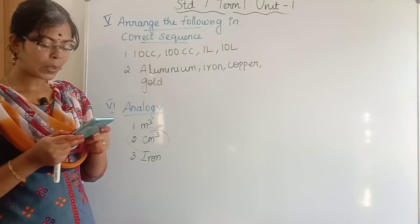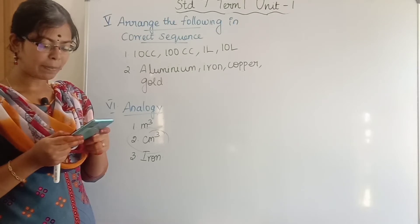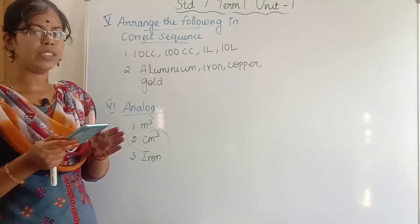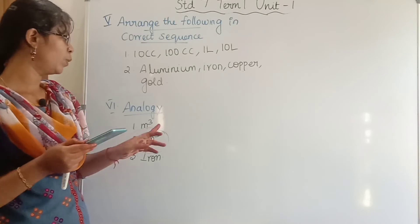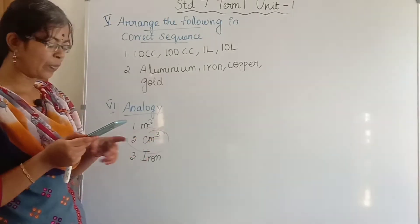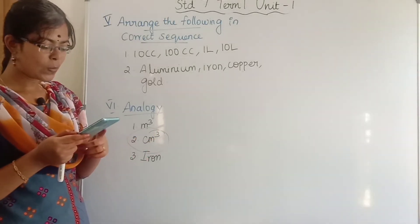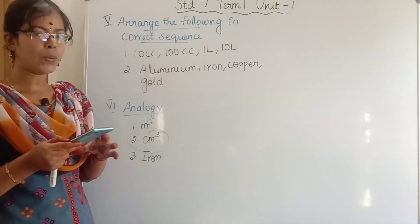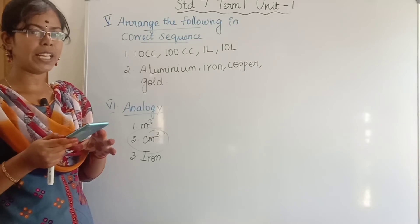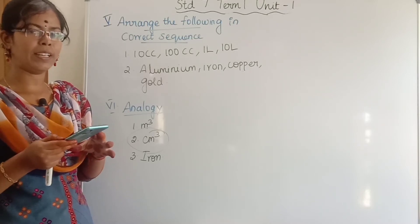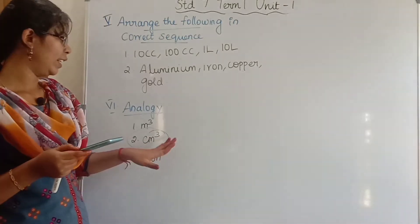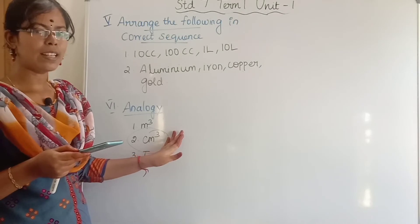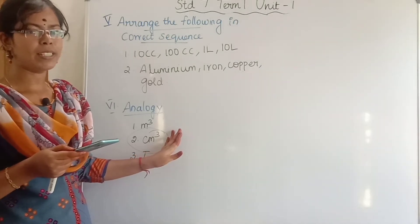Sixth section: use the analogy to fill in the blanks. First question: Area is to metre square as Volume is to metre cube. Second question — there is some doubt about this question; please confirm and mention your answer in the comment section.